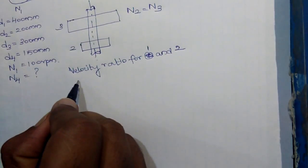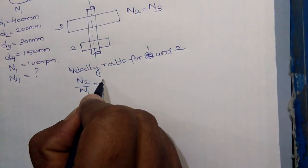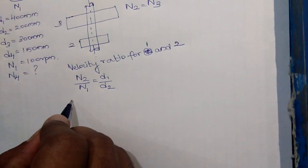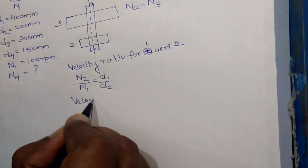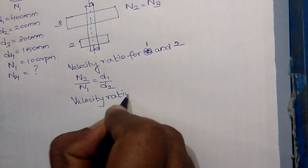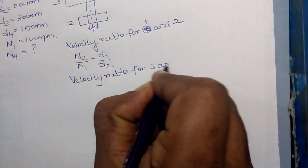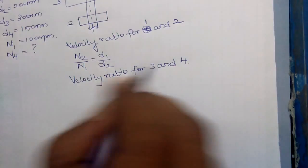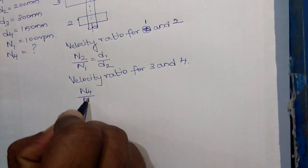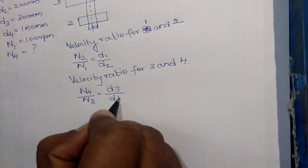And velocity ratio for pulley 3 and 4 is written as n4 by n3 is equal to d3 by d4.